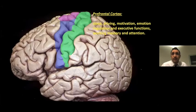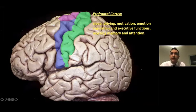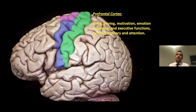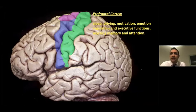The prefrontal cortex is separated from the motor and premotor regions by the presence of a prominent inner granular layer and strong interconnections with the mediodorsal thalamic nucleus. Thanks to these reciprocal interconnections, it can take on tasks such as sleep, motivation, emotional regulation, executive functions, working memory, and attention.